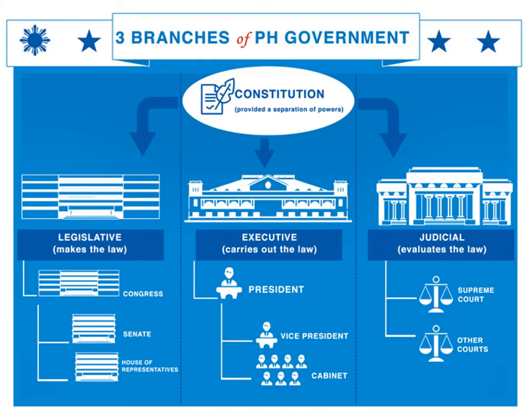How about the executive department? The executive department executes or carries out the law. It is composed of the cabinet members or cabinet departments, such as DepEd, DILG, DOH, and other departments.